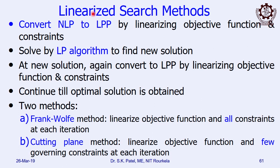Since the term is 'linearized,' the given non-linear programming problem is converted to a linear programming problem by linearizing the objective function as well as the constraints, whichever is non-linear. Once it becomes linear, you can solve it by a linear programming algorithm — either simplex or dual simplex — to find the new solutions. Then at the new solution, if anything has become non-linear again, you convert it to linear programming by linearizing. Like this, you continue till the optimal solution is obtained. This is the basic philosophy of the linearized search method.